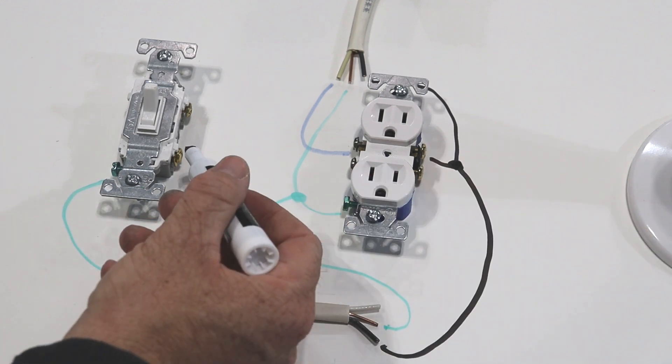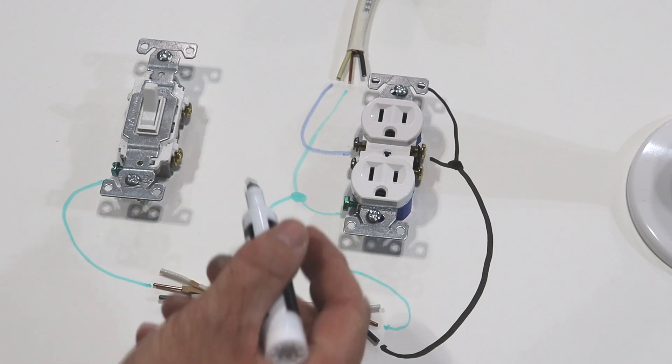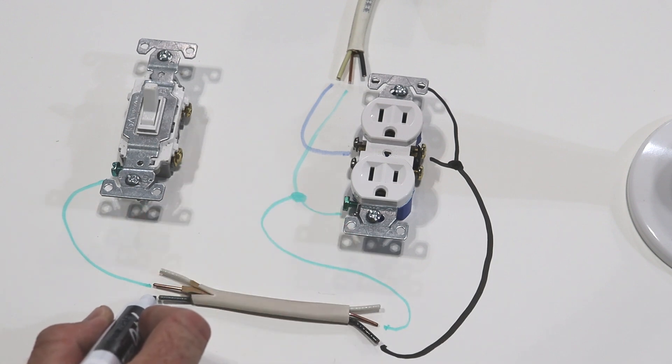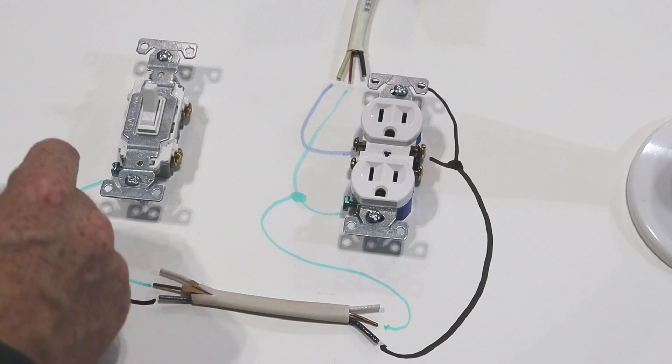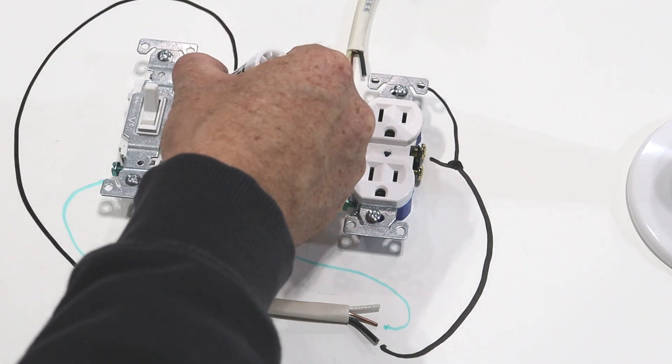Then, of course, because black wires go on these gold screws, we're going to take a black wire and we're going to connect it to one of our screws.